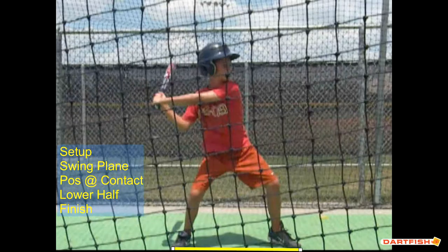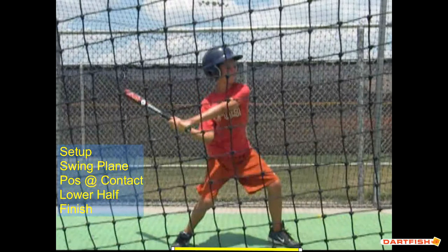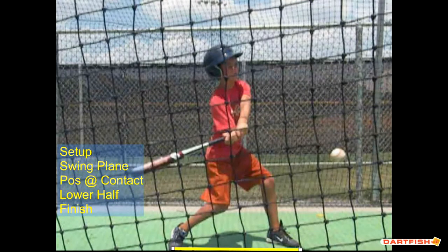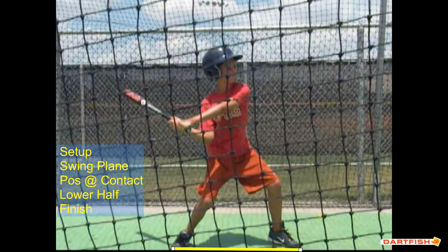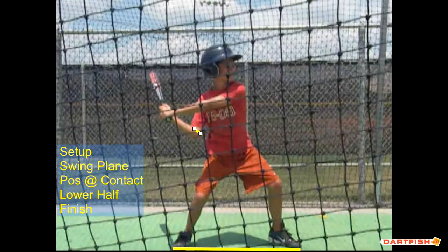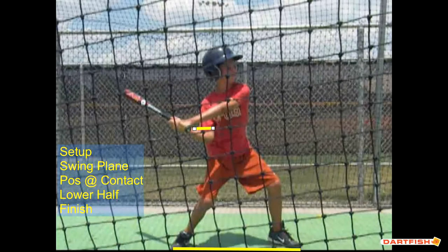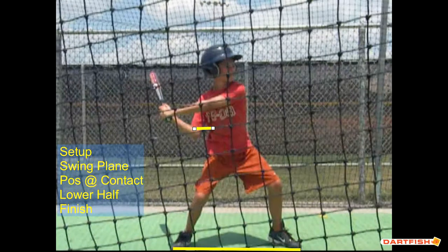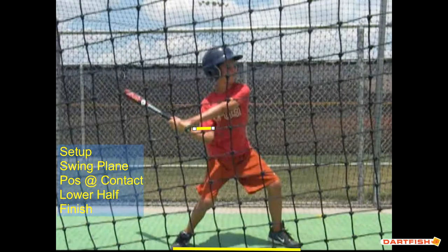Let's talk about your swing plane. Not too bad. You're a little disconnected — at this point right here, your hands are awfully far away from your body. This elbow should be right against your side here and stay connected. You do start with a little bit of a downward angle, which is good. So you come into the contact area and you do get your barrel — it looks to be on plane with the baseball right here, which is good.